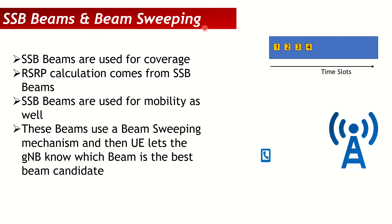How does beam sweeping work? It is open to vendor implementation, but there can be multiple SSBs. The SSB — synchronization signal block — carries the PSS, SSS, and PBCH. It is the signal used for the UE to synchronize to the system, and it's also the channel used to get the RSRP. Specifically, you look at the SSS part of the SSB to get the RSRP.